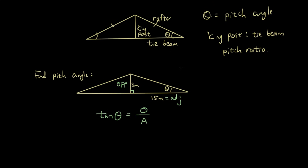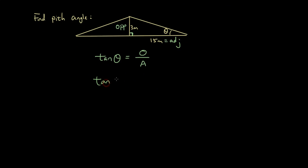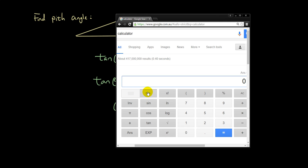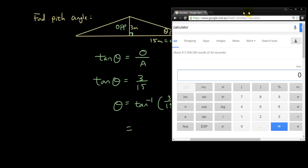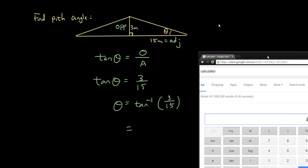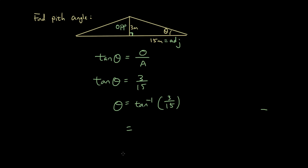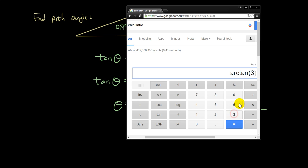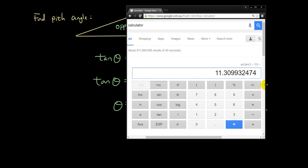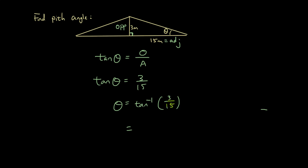We have tan theta equals 3 over 15, so theta equals inverse tan of 3 over 15. Set your calculator on degrees and type in inverse tan of 3 over 15, press equals, and you have 11.31 degrees.